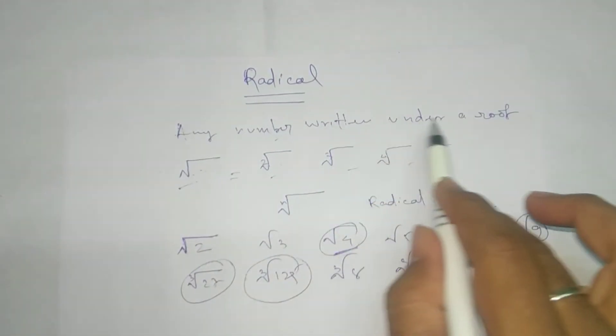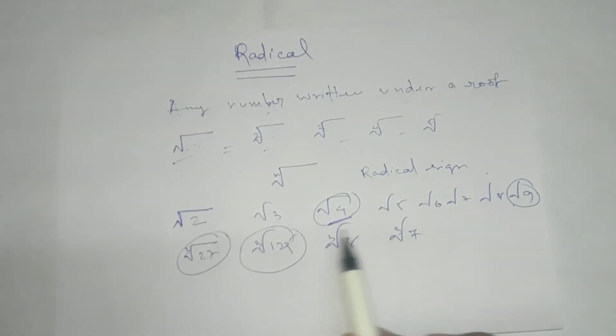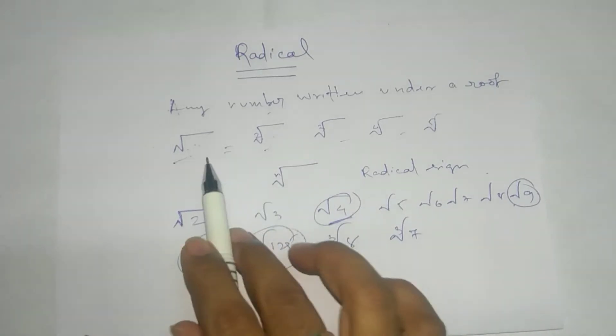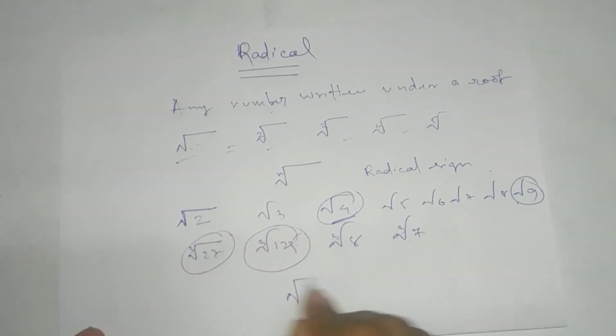See the definition. Any number written under a root. Any number. Remember it should be rational or irrational. The inside number should be rational or irrational. Like now we will take the representation.